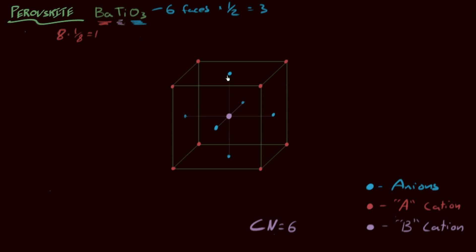We have the A cations, coordination number of 12, B cations, coordination number of 6. And that is the perovskite crystal structure.